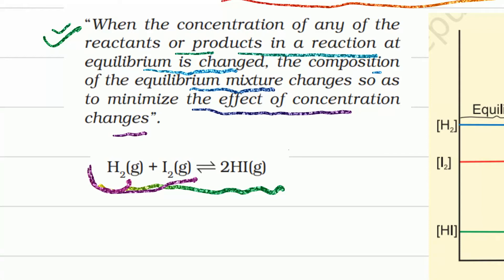If we add a reactant — that is, there is an increase in concentration — the equilibrium will shift in the forward direction to neutralize this change. This means HI formation becomes more favorable.